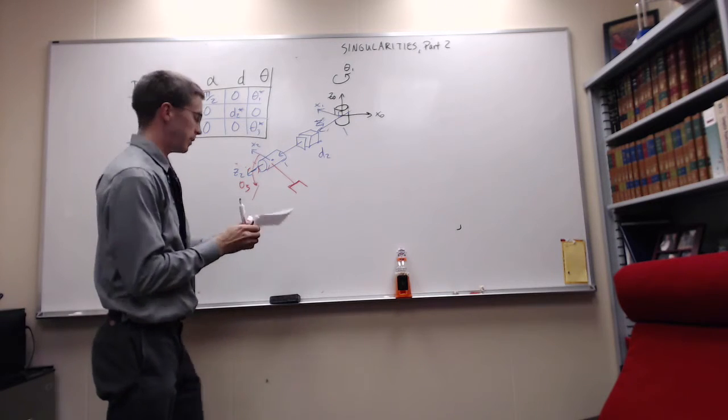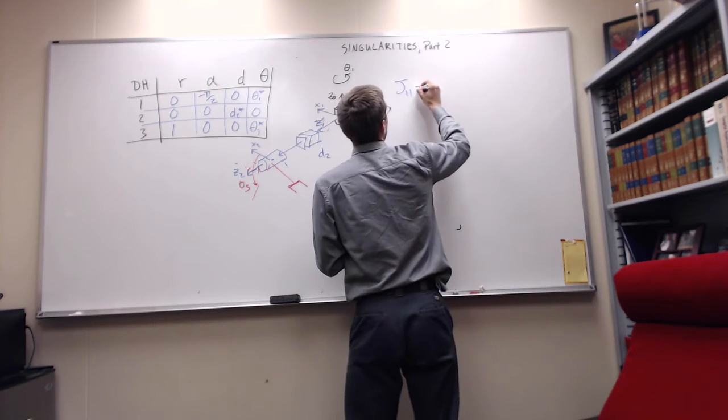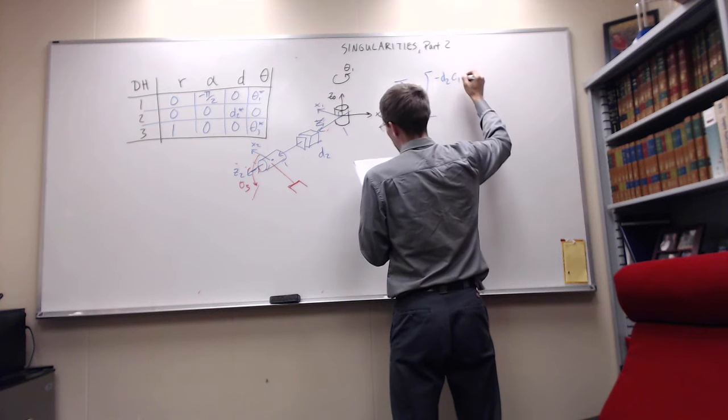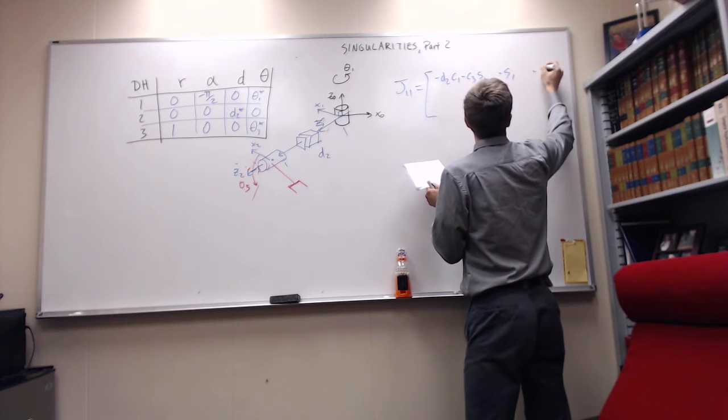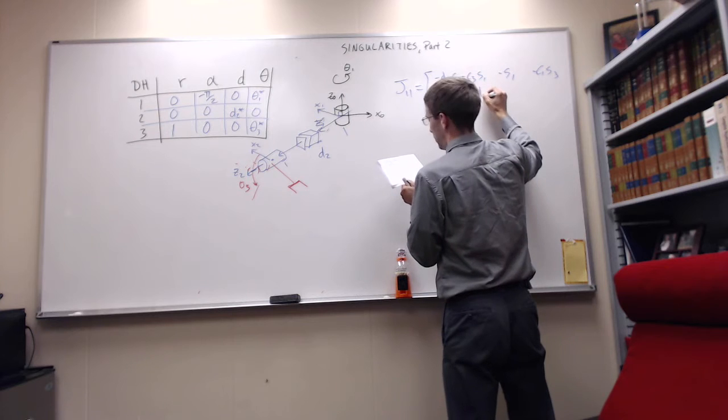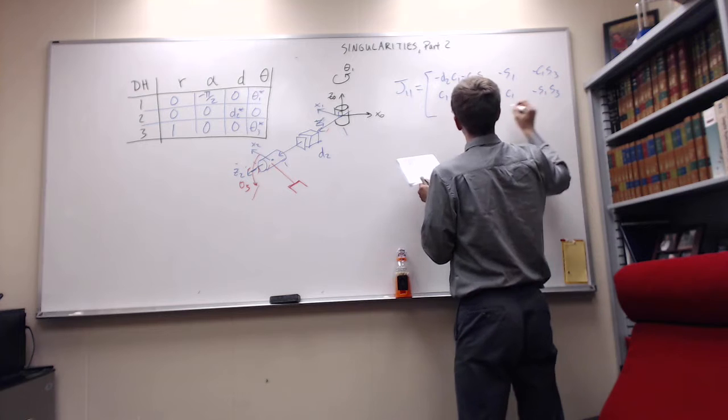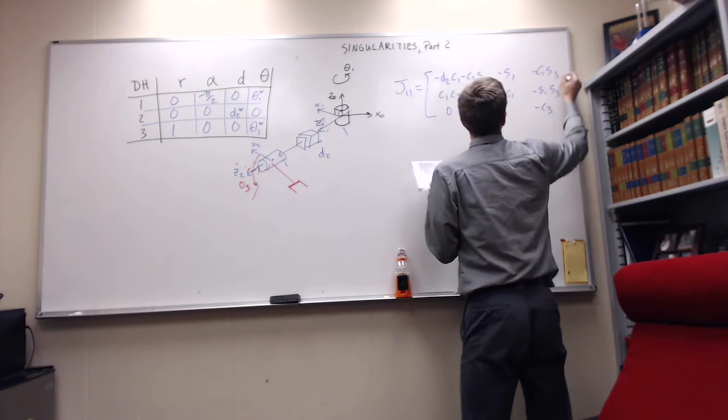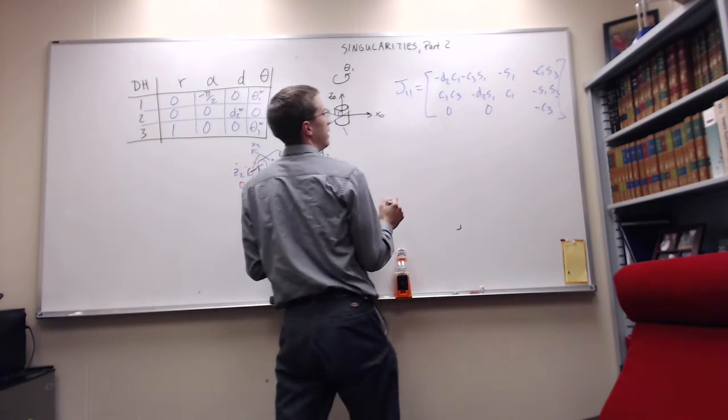What's the Jacobian here? This is a velocity Jacobian, the first three rows. It's got negative D two C one minus C three S one, then negative S one, negative C one S three. Next is C one C three minus D two S one, C one, and S three. Then zero, zero, negative C three. You can see why I picked this one, because I'm going to expand along this bottom row and only have one term in my determinant.